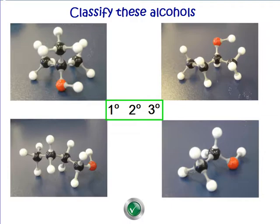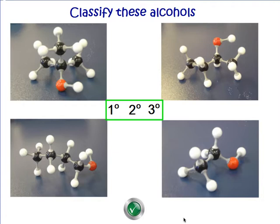Let's have a look at a couple of examples. These have been made with the MollyMod kits — have a look at them and see if you can work out whether they're primary, secondary, or tertiary alcohols. You might like to pause the video to give yourself a bit of extra time to identify which is which.